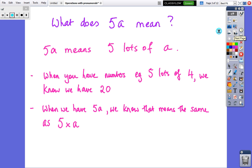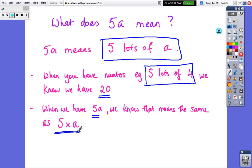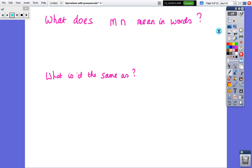So what does 5a mean? Well, 5a just means you have 5 lots of a. When you have a number, for instance 5 lots of 4, that equals 20. But when we have 5a we just say you have 5 times a. Copy that down if you need to. What does mn mean in words? What's it the same as? I want you to pause, write down two answers, and then come back.